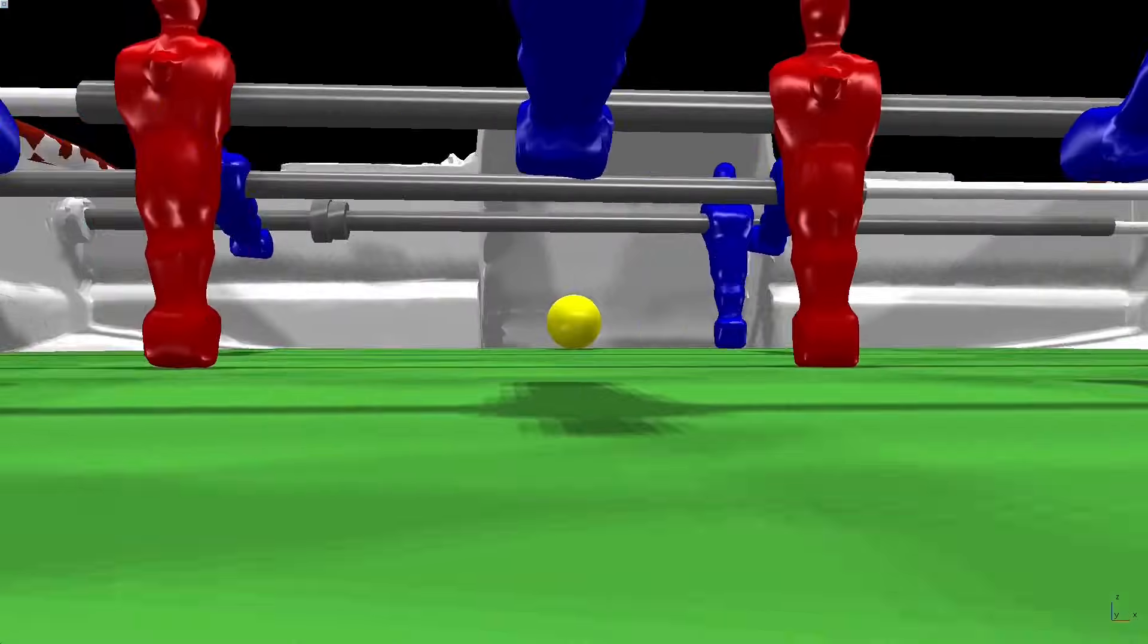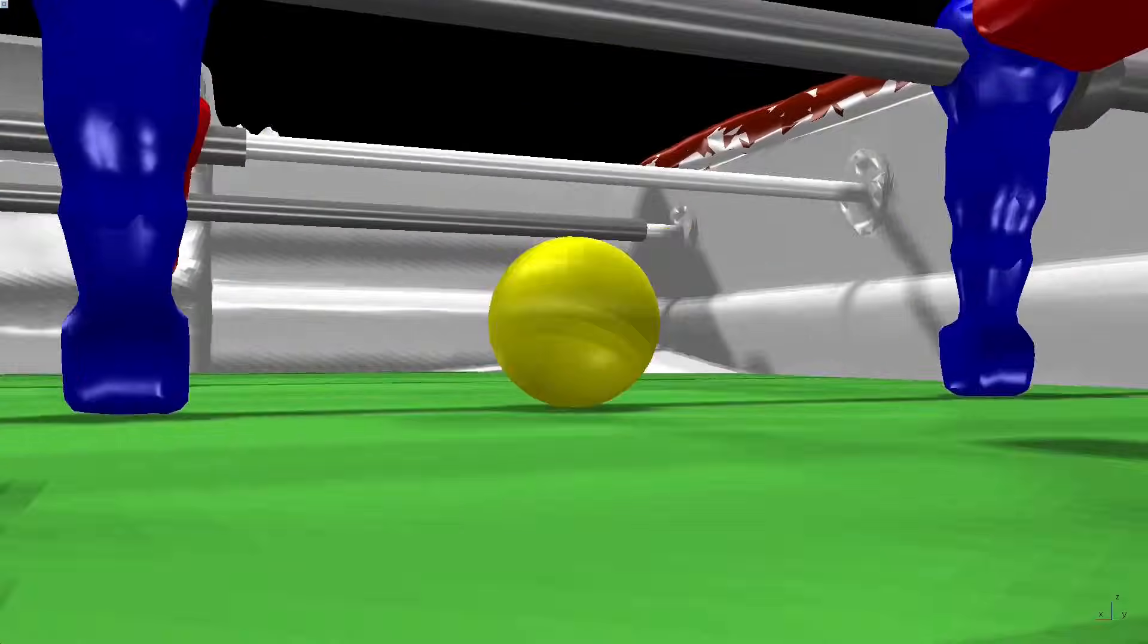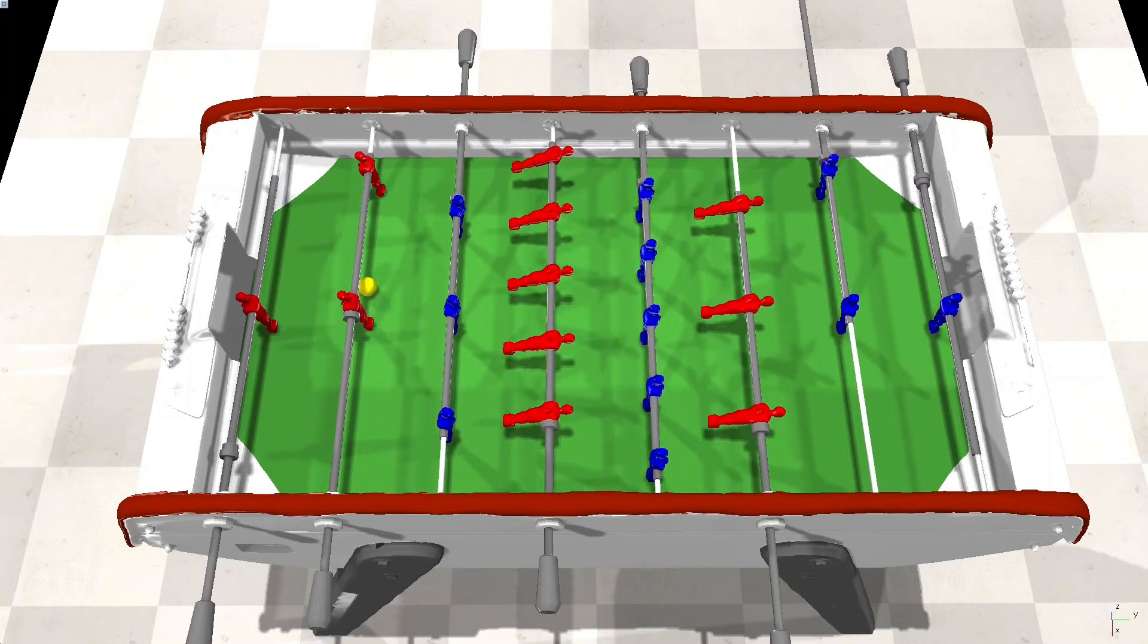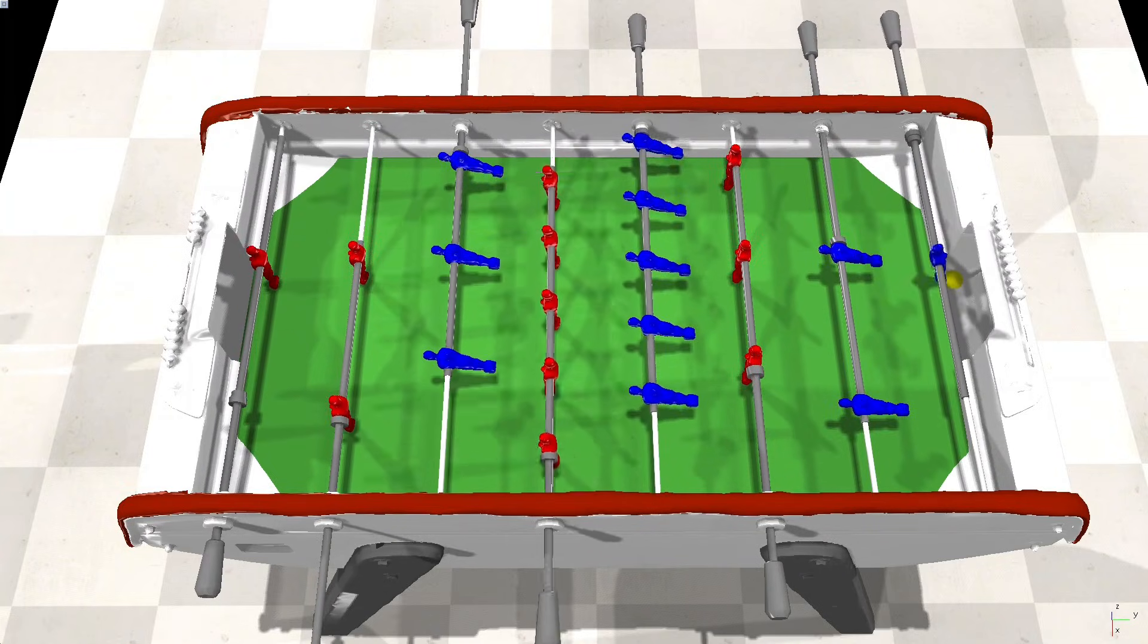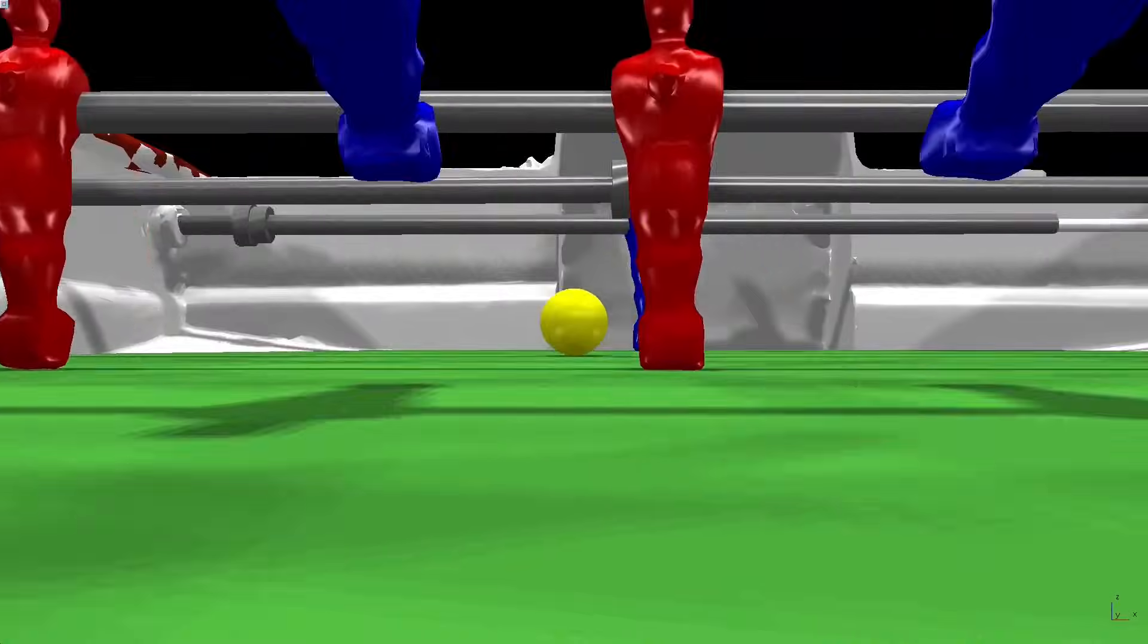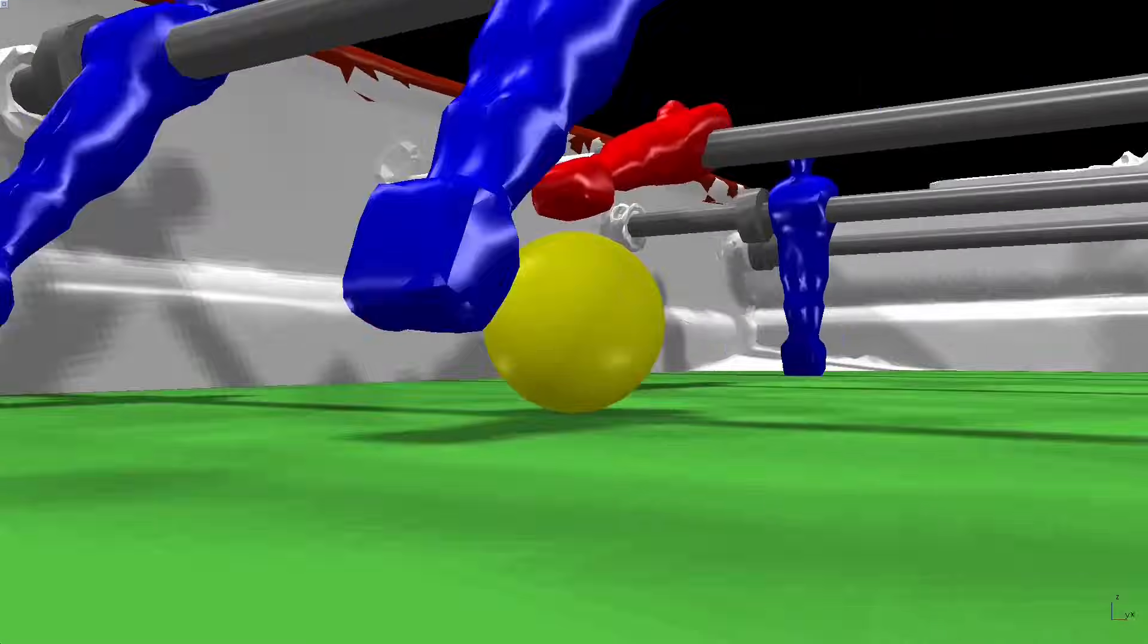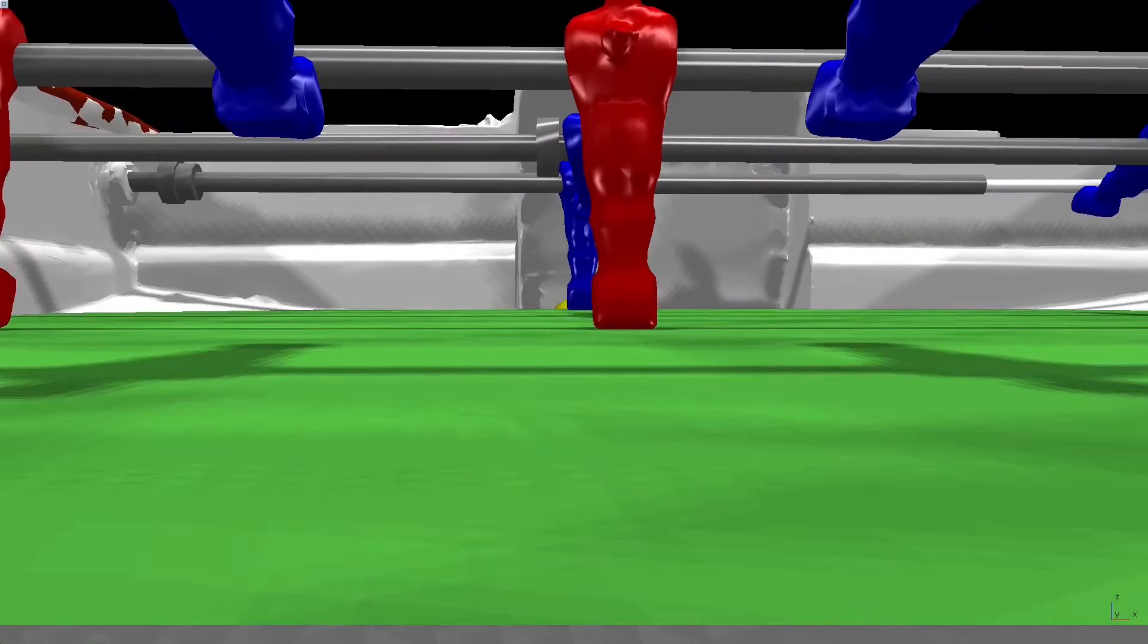To actually beat my cocky colleague, I'll need to upgrade these guys with ball control so they stop treating it like a hot potato. Actual shooting skills, not just random hoping. And teamwork. Currently, they pass like my Wi-Fi signal. Unreliable.